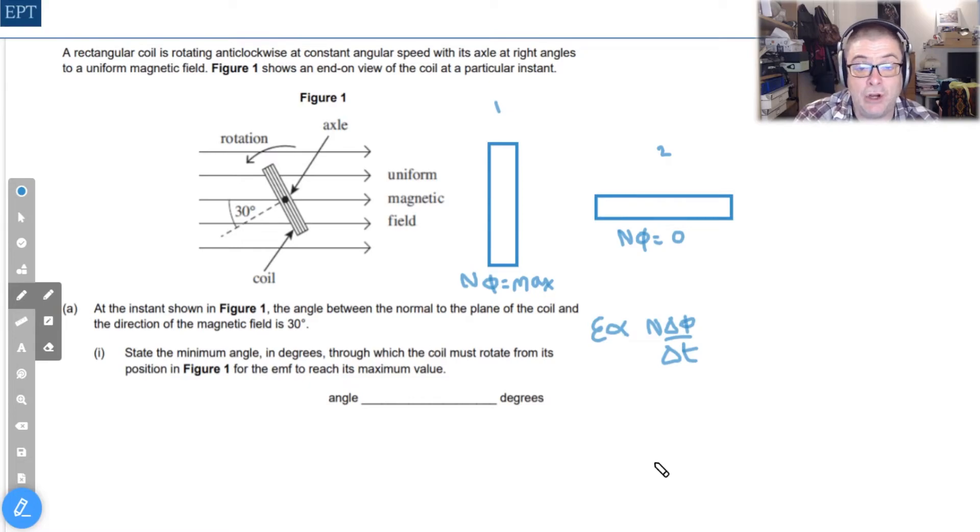Now in position number one as we said we have the maximum flux linkage. And after a small angle of rotation, let's say it moves anti-clockwise another five degrees, that means that the flux linkage is actually going to have gone down a bit fairly obviously.